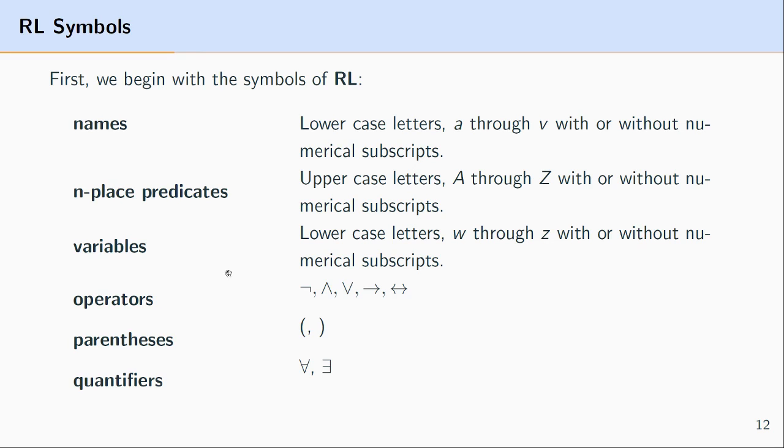Finally, there are two quantifiers. These quantifiers are the universal quantifier and the existential quantifier. The universal quantifier refers to the upside down A, and the existential quantifier refers to the backward E.